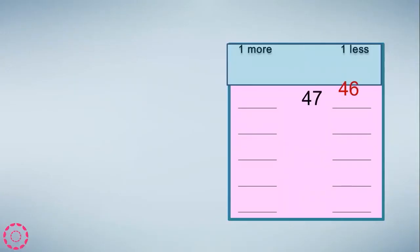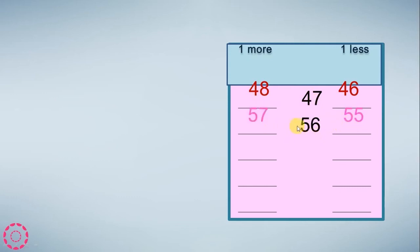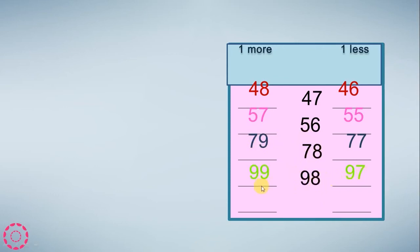1 less and 1 more. We have 47: 46 is less than 47, and 48 is more than 47. We have 56: 55 is less than 56, and 57 is more than 56. We have 78: 77 is less than 78, and 79 is more than 78. We have 63: 61 is less than 63, and 64 is more than 63.